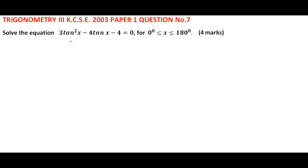Solve the equation 3 tan²x − 4 tan x − 4 = 0 for 0 degrees up to 180 degrees.